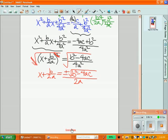And now we have one step left to solve for x. We need to get x all by itself. So I have to get rid of that b over 2a. So I'm going to subtract b over 2a from both sides. And of course those cancel out.